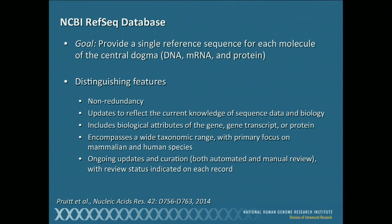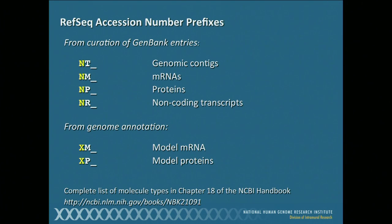Obviously, because each one of these molecules is represented only once, it is non-redundant. There are folks at NCBI who update these records to reflect the current knowledge of sequence data and biology. That's very good when you're looking at the actual GenBank entries — it gives you information about the biological attributes of the gene, the gene transcript, or the protein. Wide taxonomic range and ongoing curation, which I think is the most valuable part of this database.